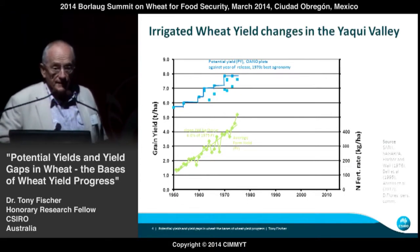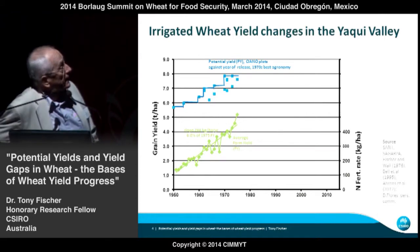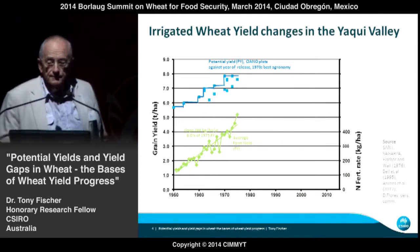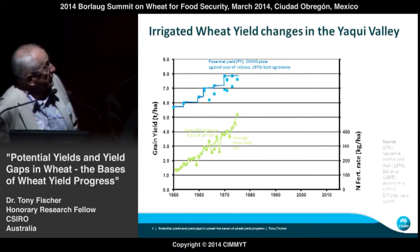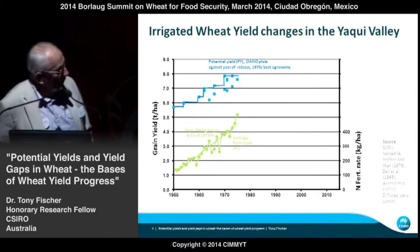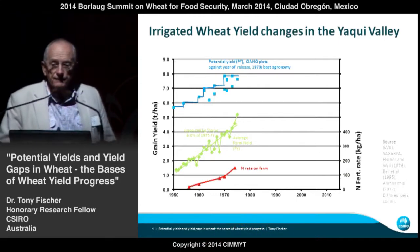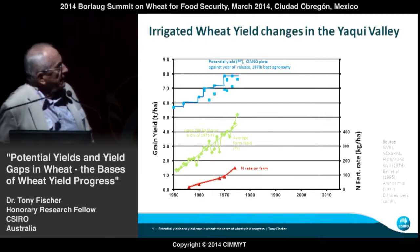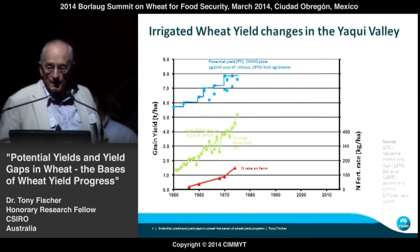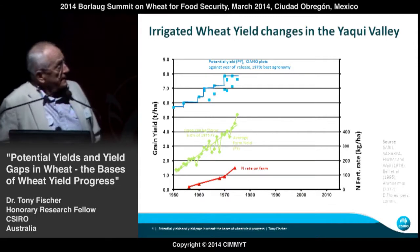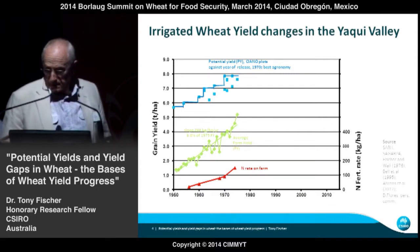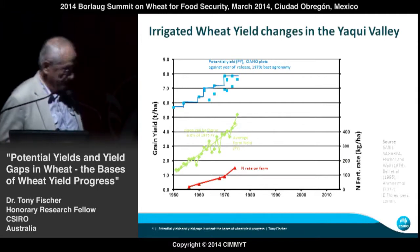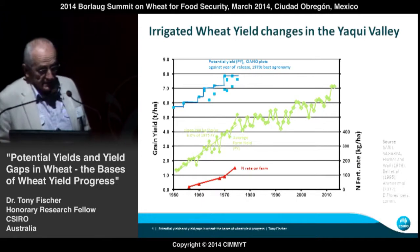At least some of the yield progress must be due to varieties, though in a relative sense perhaps only a fraction of it. We were also able to get data on nitrogen rates on farms over that period, and concluded that what we see at the farm level is a combination of breeding progress and the application of nitrogen, and the interaction between these two components.